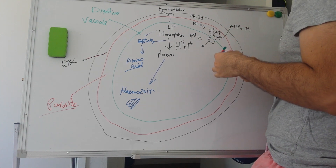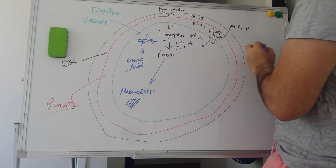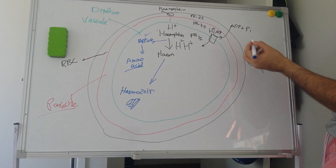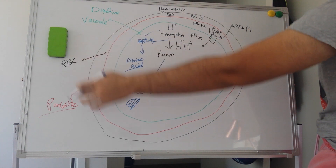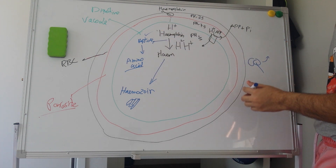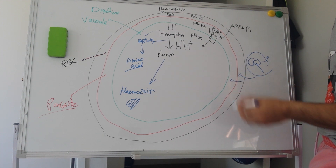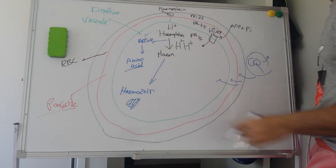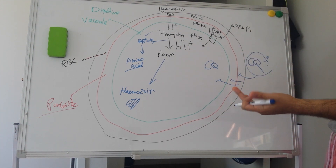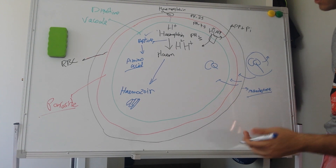So why do we care about CQ — chloroquine — and what is its role here? CQ is neutral — there is no charge on it. Since the membrane of the red blood cell is made up of a lipid bilayer, and CQ is neutral and non-polar, it can easily cross the membrane with no problem. It can also cross into the parasite and into the digestive vacuole because it is non-polar.